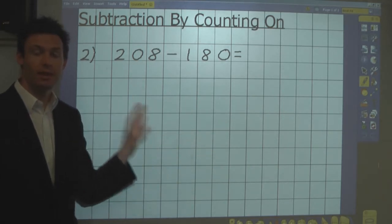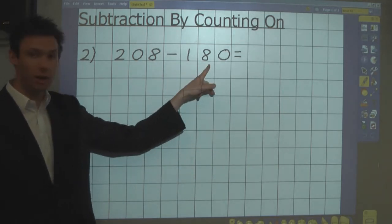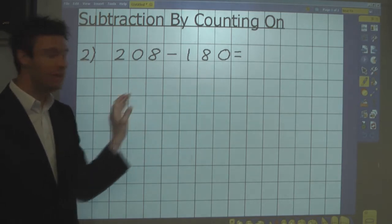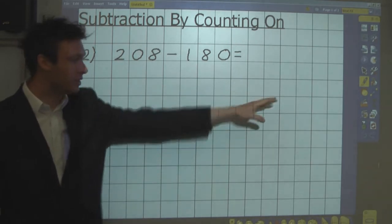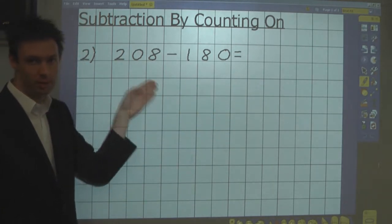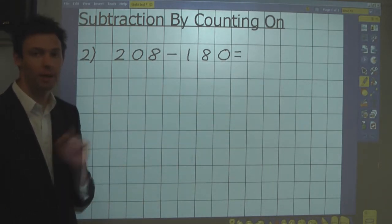And the reason we would count on is if we were taking away a larger number. It's easier to count on from a large number to get your answer than it is to count backwards taking away the large number. Let me demonstrate.